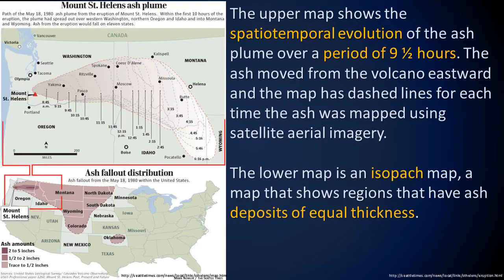These are two maps from the Seattle Times published after the eruption. The upper map shows the spatiotemporal evolution of the ash plume over a period of nine and a half hours, with dashed lines for each time the ash was mapped using satellite and aerial imagery. The lower map is an isopach map — a map that shows regions with ash deposits of equal thickness.